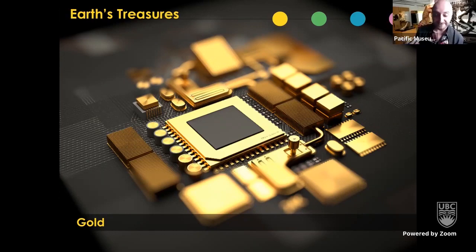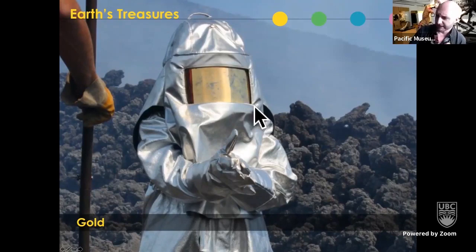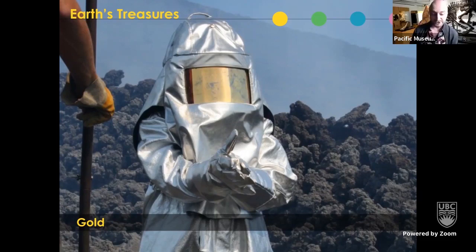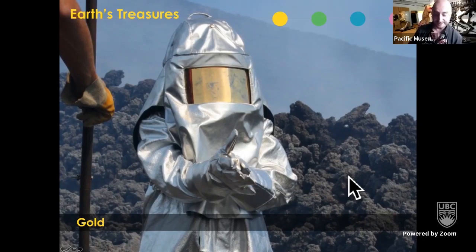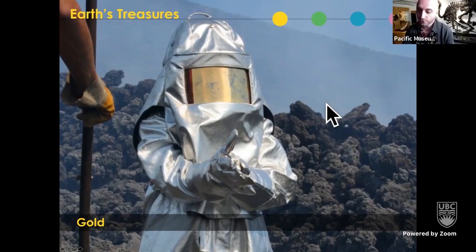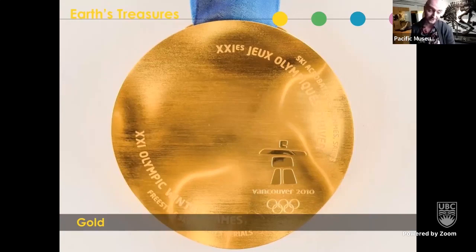The James Webb Telescope has a prominent gold receiving dish — gold is used in space technology for its reflective properties. Volcanologists also use face shields with gold embedded in them to reflect the heat and radiation from volcanoes, since gold is transparent to visible light but reflective of infrared. And of course we all know gold as a decorative metal — when you win the Olympics, you get a gold medal.